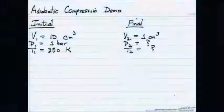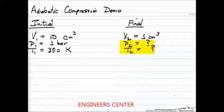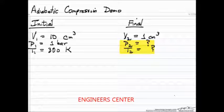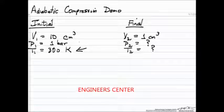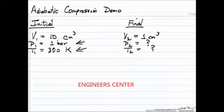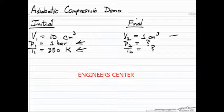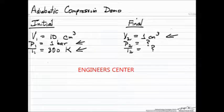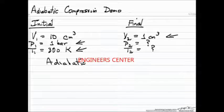This is an example of calculating the final temperature and pressure that we might be able to obtain in an adiabatic compression. So we'll start around room temperature, one bar pressure, and let's assume we have ten cubic centimeters that we're going to compress to one cubic centimeter. We're going to do this fast, and so we're going to assume it's adiabatic.